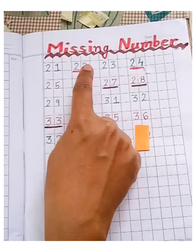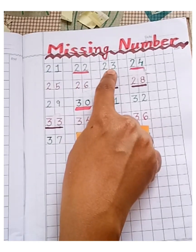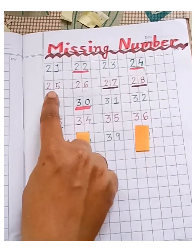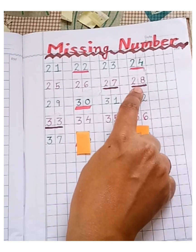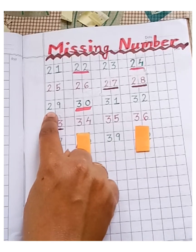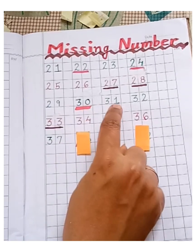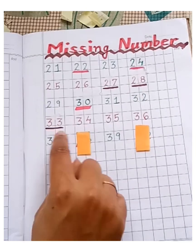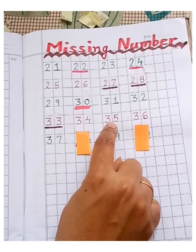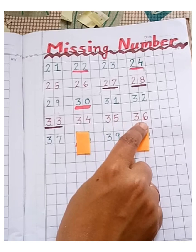So, 21, 22, 23, 24, 25, 26, 27, 28, 29, 30, 31, 32, 33, 34, 35, 36.